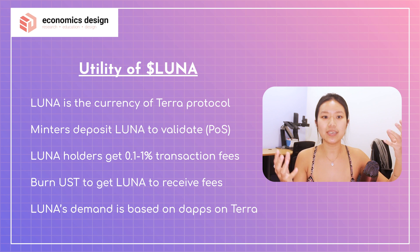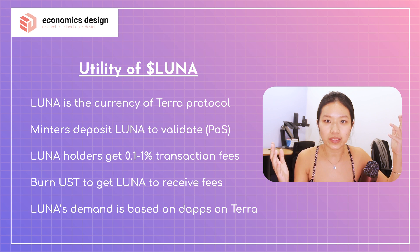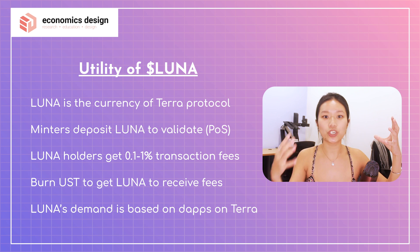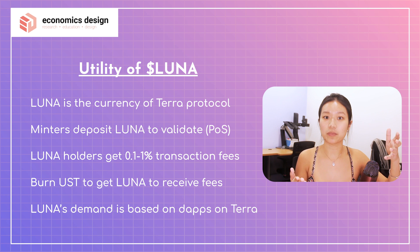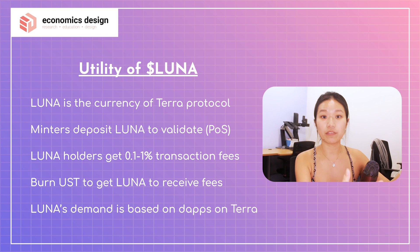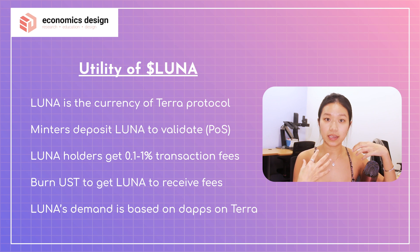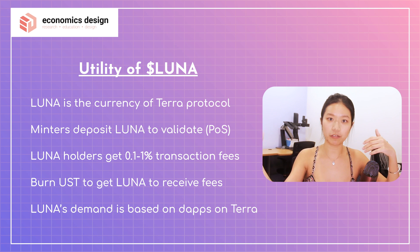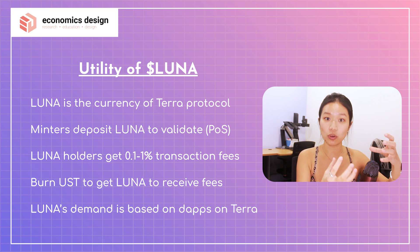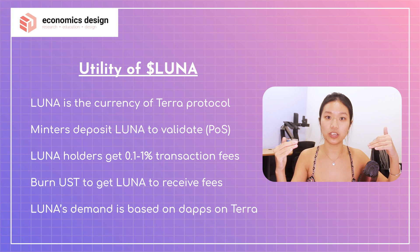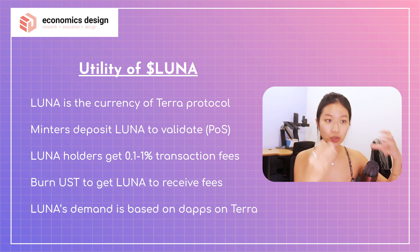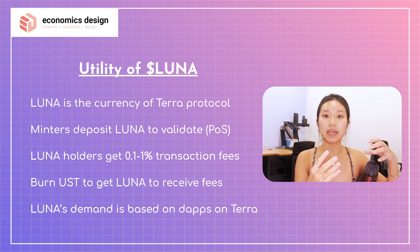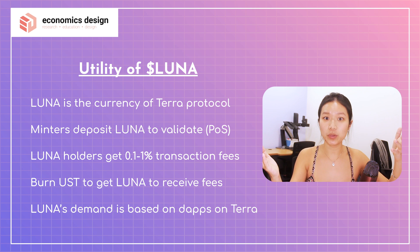If you're just trading Luna for UST and there is no utility for UST, that's not a good system. But if Luna is used to validate real transactions and you earn returns based on the work done by Luna — accruing future cash flow in the form of future transaction fees to Luna token holders — that's a good system. So Luna's demand will be greatly dependent on the applications built on Terra. More applications built on Terra means higher value of Luna, and higher stability of UST.